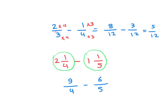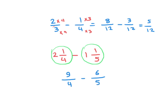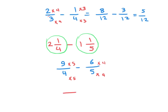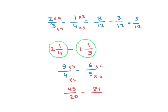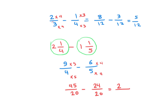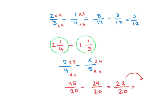Multiply 4 by 5 and 9 by 5 to get 45 over 20, then multiply 5 by 4 and 6 by 4 to get 24 over 20. Subtracting gives 21 over 20. If required to convert to a mixed number: how many 20s in 21? One, with remainder 1. So the answer is 1 and 1 over 20.